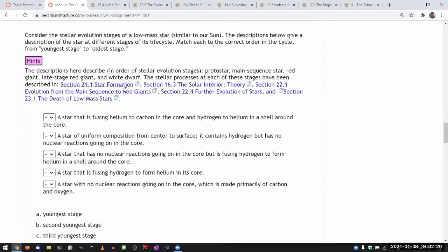This is the section that describes protostar, and this is the section that describes the star like our sun, a star on main sequence, that's fusing hydrogen in the core and nowhere else. And this describes the main sequence star that is going on to become a red giant.